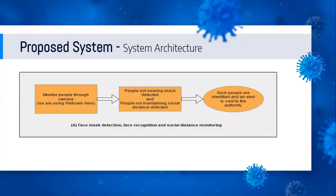This is our system architecture. We first monitor people using a camera, and if people are not wearing masks, it is detected in our system and they are recognized. Also, if people are not maintaining social distancing, it is detected in our system. After this, such people are identified and an alert is sent to the authority and to the person who is not following the norms.